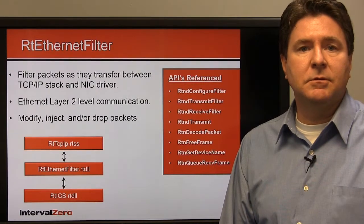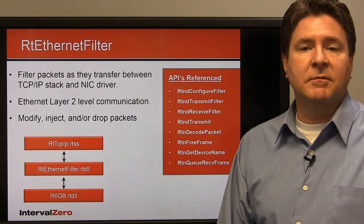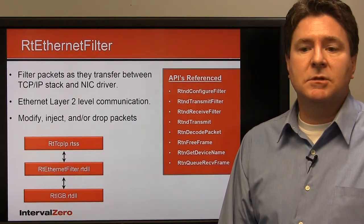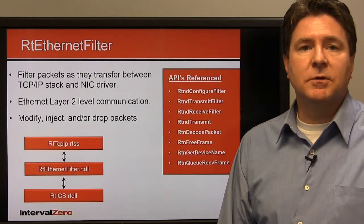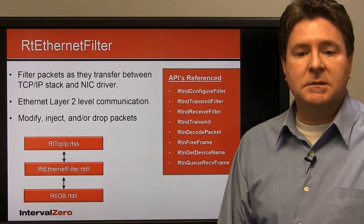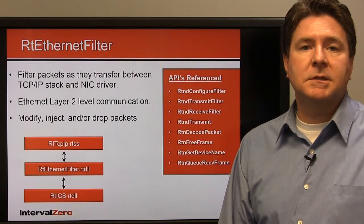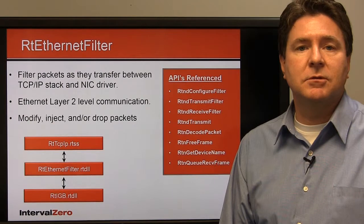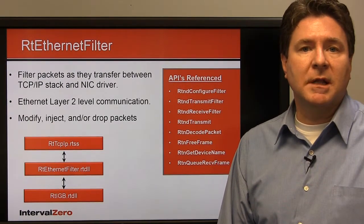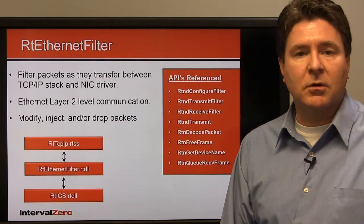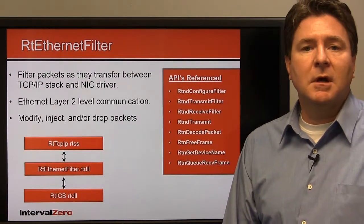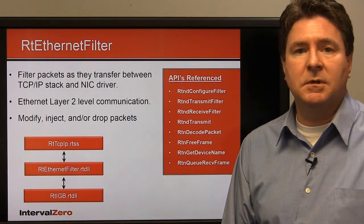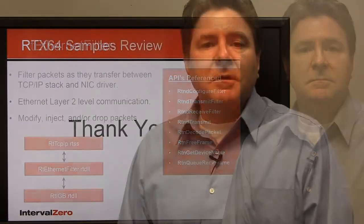The same goes for the RTND receive filter call. We can also inject a packet: allocate a frame, build it up ourselves as a Layer 2 packet with the MAC address and ether type, then call the RTND transmit call to send it directly out the NIC. For packets we want to inject on the receive path, we call RTND queue receive frame. This is an excellent example for Layer 2 communication — similar to Linux raw sockets — and you would use this for something like building an EtherCAT master.